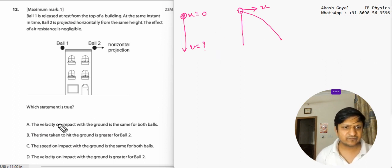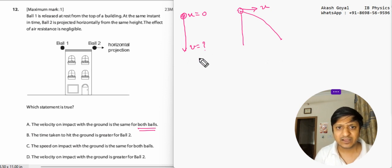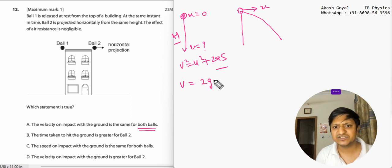It says the velocity on impact with the ground is same for both balls. Now you tell me what it would be. First, see the velocity in the first case - it is only the vertical component that will be active. So v squared equals u squared plus 2as, that will be the formula from height x. So v equals, u is 0, root 2gh. So this will be the velocity.